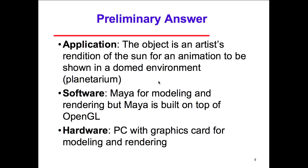Our preliminary answer could come from different angles. From an application perspective, the object is an artist's rendition of the sun from an animation shown in a dome environment — a planetarium. From a software perspective, Maya is what digital arts people generally use for modeling and rendering. But Maya is built on top of OpenGL, which is why we're talking about OpenGL in this class. Maya is a higher-level API written on top of OpenGL, which is the graphic component. It also gives you animation, timing, and speed.